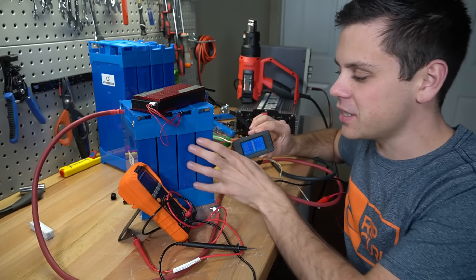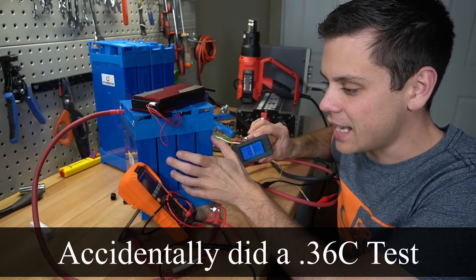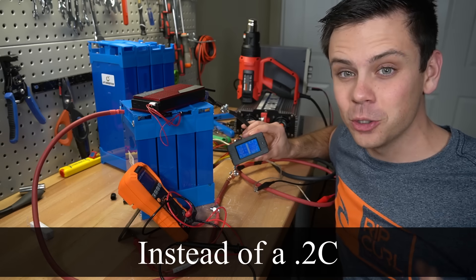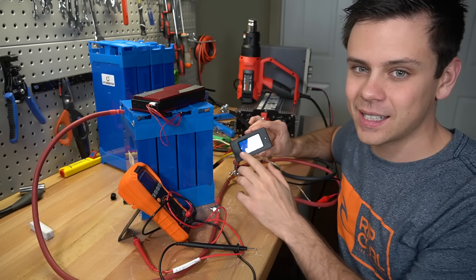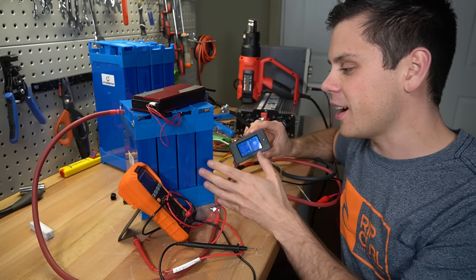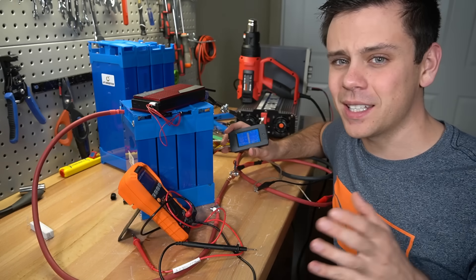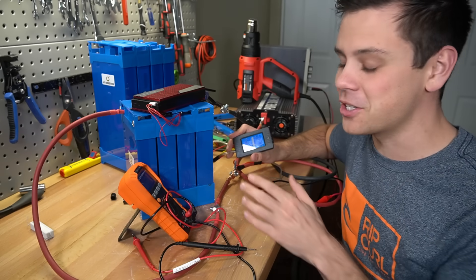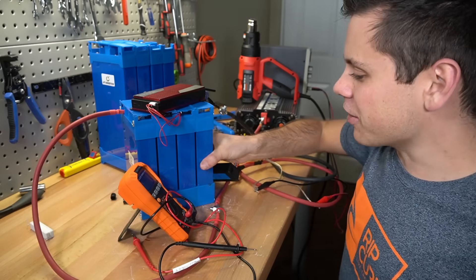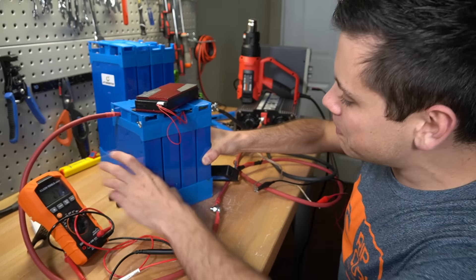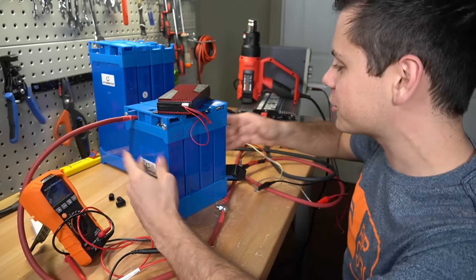These are the capacity test results: 783 watt hours and 61.3 amp hours. What's crazy is I actually did a 0.36C test instead of a 0.2C so this should be more like 65 amp hours. I forgot that this is not a 100 amp hour battery so I made a little mistake but it still pulled full capacity which is a really good sign. God aren't these cells cool? It's passed every test so far and they're so nice.